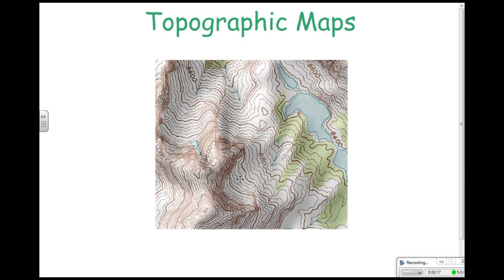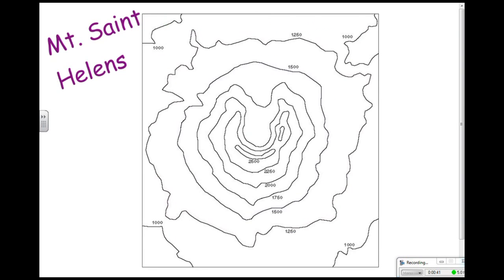Hey guys, recently you viewed a video that reviewed things you should already know about maps in general. This video will focus on one type of map: a topographic map. A topographic map describes the physical features of an area, especially the elevation. We mostly use these types of maps when looking at mountains or craters. A topographic map takes a 3D landform and flattens it so you can look at it from a bird's eye point of view.